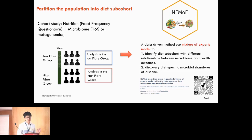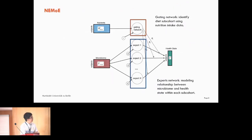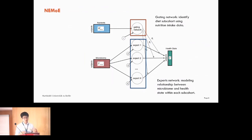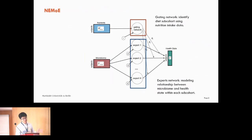The second goal is to discover diet-specific microbial signatures of disease. In this case we use Parkinson's disease as an illustration and discover diet-specific microbial signatures of Parkinson's disease. The NEMO model is composed of two parts: a gating network and an expert network. The gating network serves as partition into latent classes — what we call diet subtypes — identifying diet sub-cohorts using nutrition data. The expert network focuses on modeling the microbiome–health state relationship within each sub-cohort. Both networks are determined entirely by data.